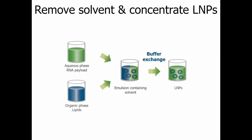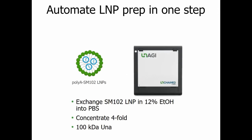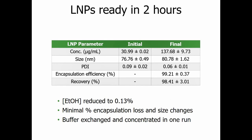For LNPs, getting them out of ethanol quickly after manufacturing is critical. Using SM-102 LNPs starting in 12% ethanol with a target four-fold concentration using a 100 kilodalton UNA, results were obtained in less than two hours with no compromise to sample integrity. Both size and PDI showed low to no change, minimal percent encapsulation loss, all achieved during buffer exchange and concentration in one run.